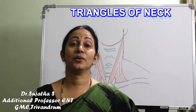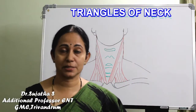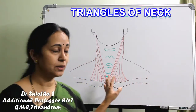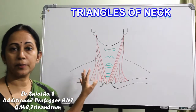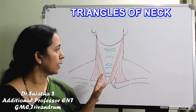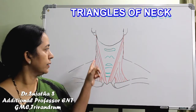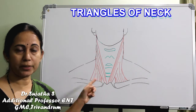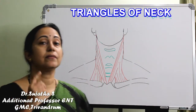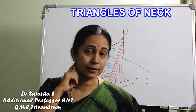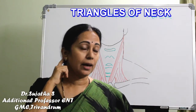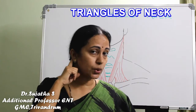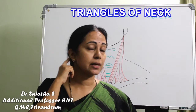The surface anatomy of the neck was explained earlier with this diagram, so this will be familiar to you. This is the sternocleidomastoid muscle, which is a major muscle in the neck originating from the mastoid prominence.